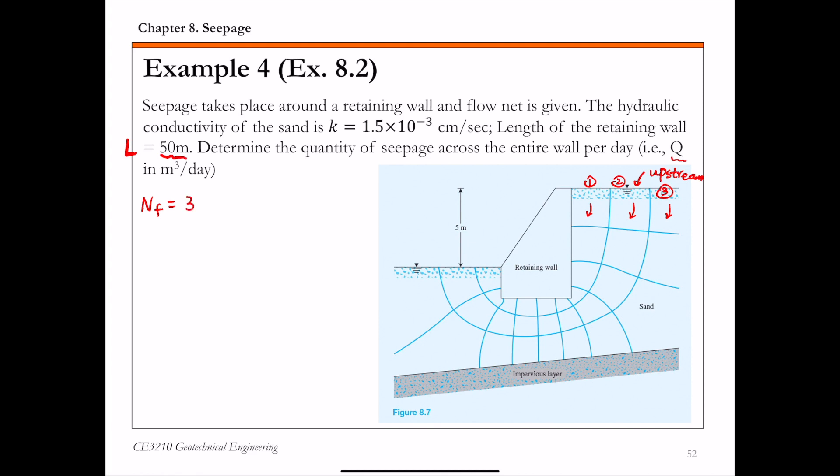And then ND, the number of potential drops from upstream to downstream. We can count: that's 1, 2, 3, 4, 5, 6, 7, 8, 9, and 10.